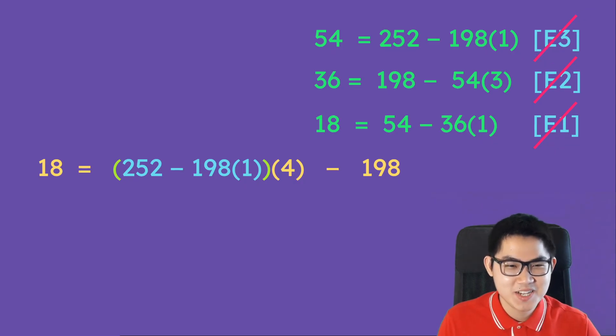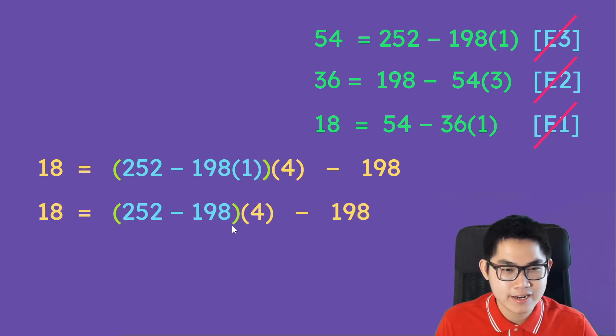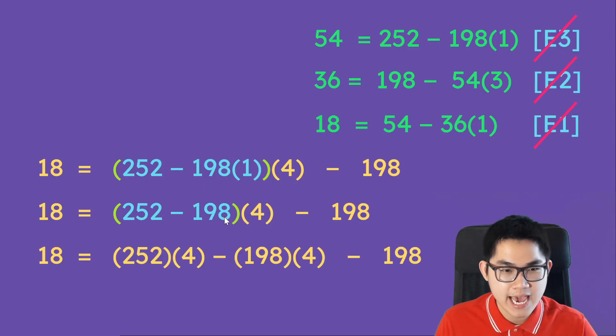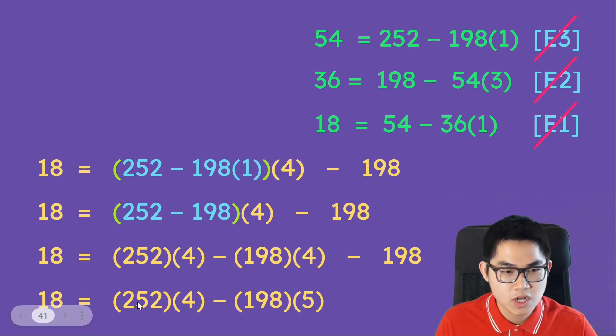We are almost done. So here we have 198 times 1. We don't need to write the times 1. So we rewrite it like this. And then we have 4 times 252, then take 4 times 198. That's what we're going to have. And then we're going to simplify this part. So we have 18 is equal to 252 times 4 minus 198 times 5.